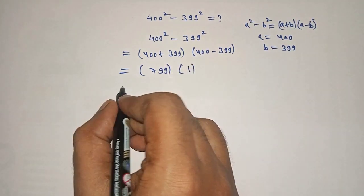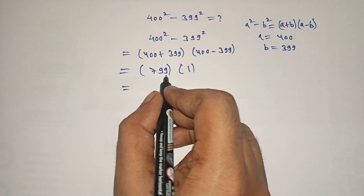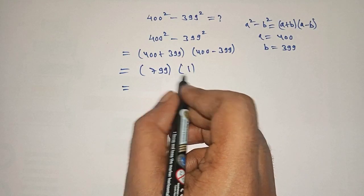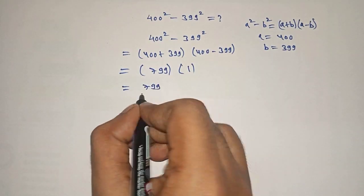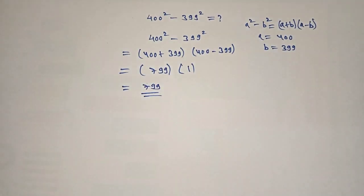799 into 1 is 799, which is our answer. If you like my video, please subscribe to my channel. Thank you.